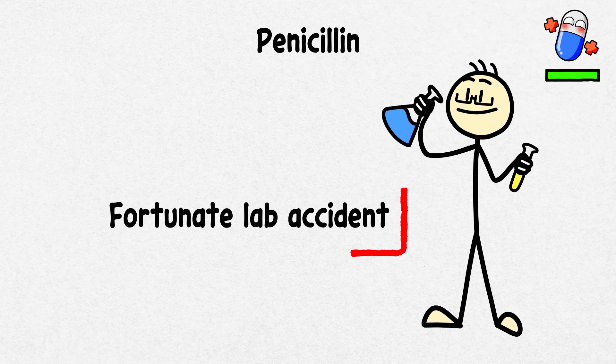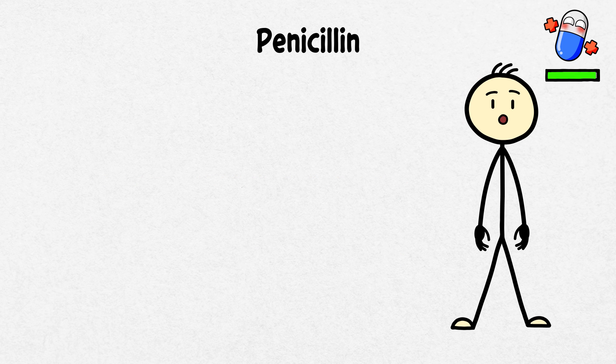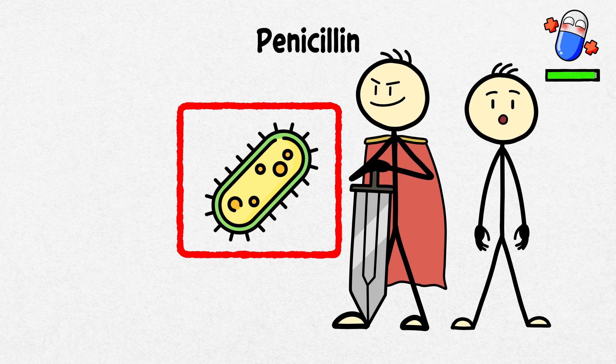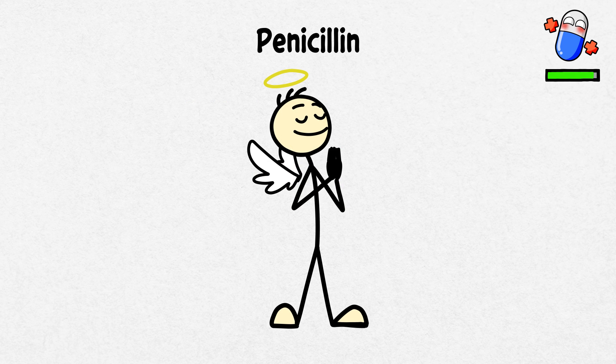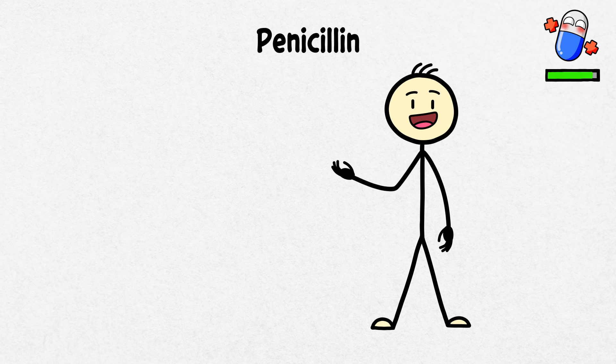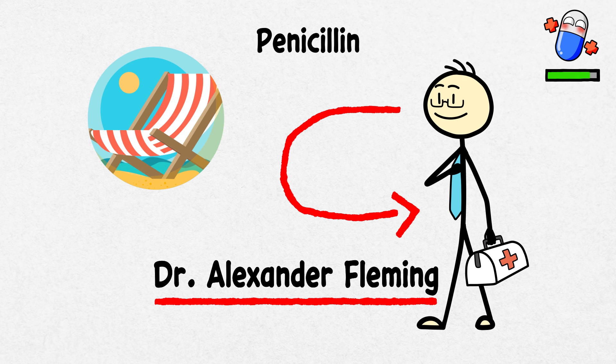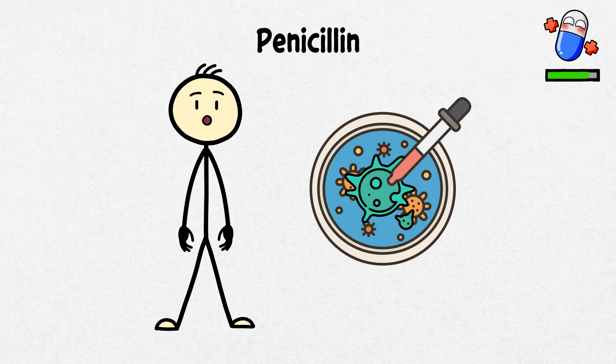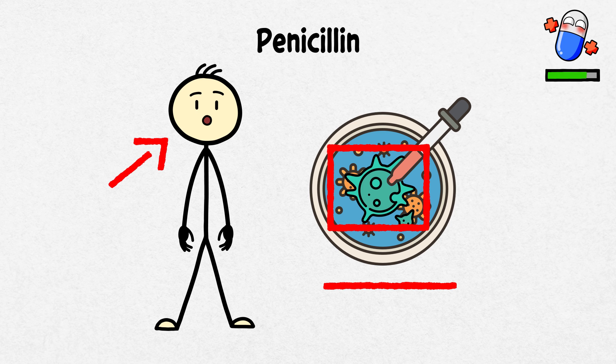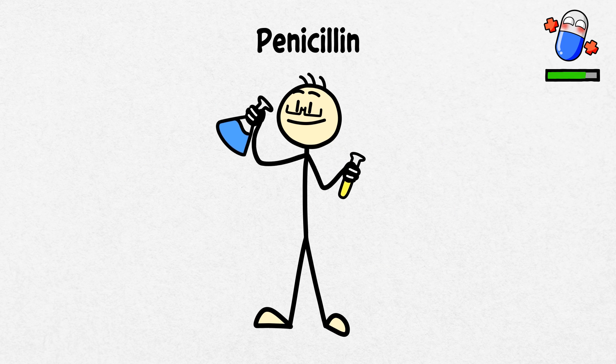Penicillin. If it weren't for a fortunate lab accident, we might still be trying to fight bacterial infections with chicken soup and wishful thinking instead of the miracle that is penicillin. In 1928, Dr. Alexander Fleming returned from vacation to find mold growing on a petri dish of bacteria. Surprisingly, the mold stopped the bacteria from growing, leading him to discover penicillin.